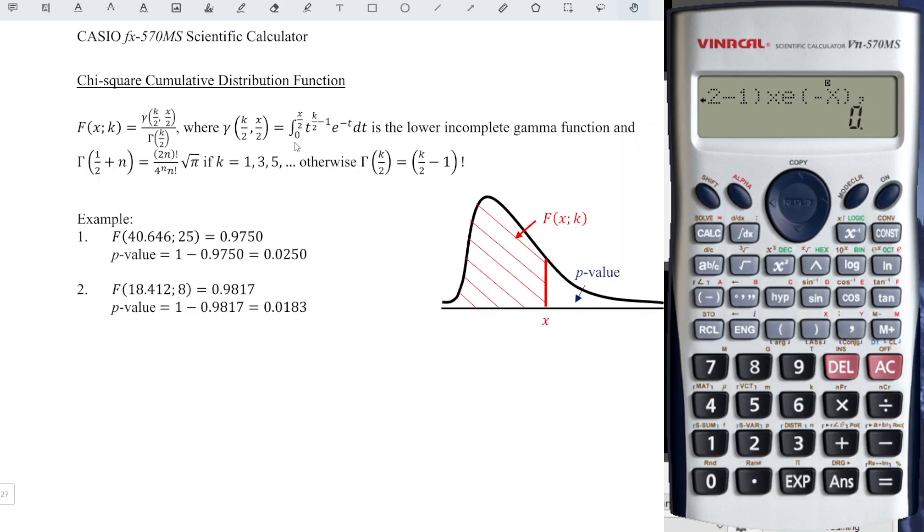And we have the lower limit, which is zero comma. Followed by the upper limit x over 2. x is the critical value for this case. This is 40.646. Remember to take over 2 as we can see here. Then we press equal.